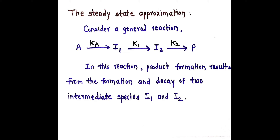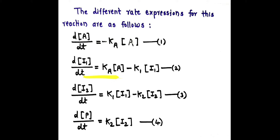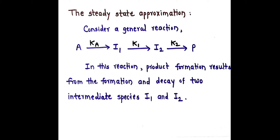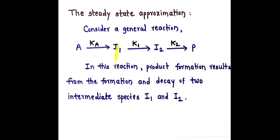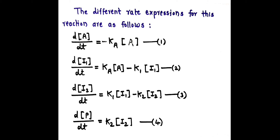The second expression: dI1/dt = Ka[A] - K1[I1]. I1 is formed from A, therefore Ka[A], minus K1[I1] because when I1 converts to I2, the rate constant is K1, therefore it is minus K1[I1].